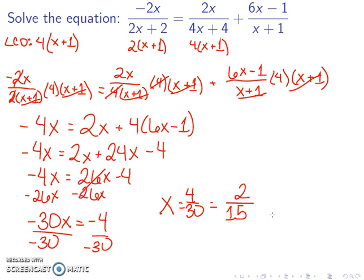Anytime I'm solving an equation involving fractions, I need to double check that this does not give me 0 in the denominator, and I can see that it doesn't. Therefore, my answer is 2 over 15.